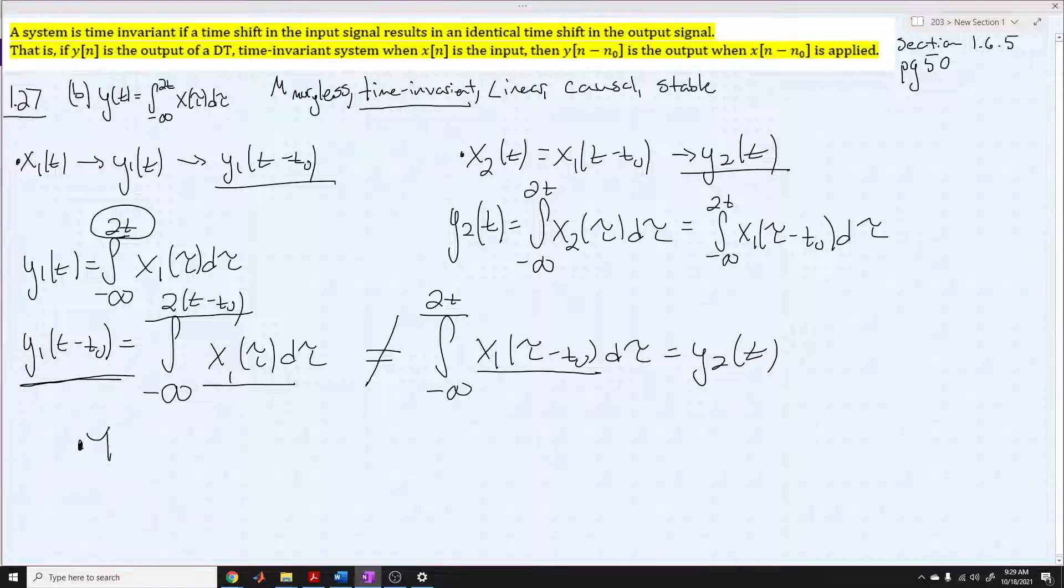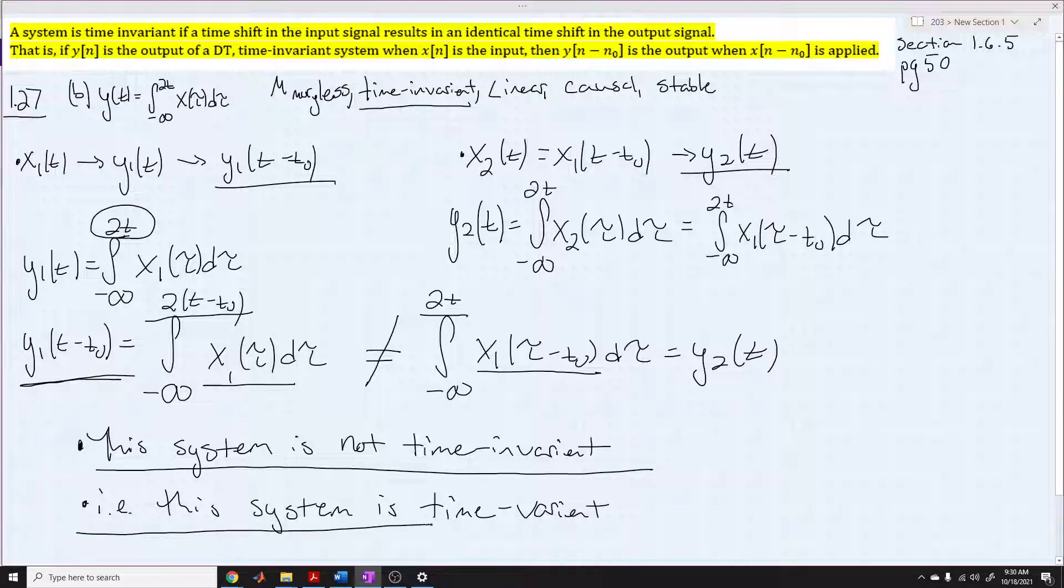And there's going to be a lot more than one input signal where this is not going to be equal. And if it's not equal for one input signal, then it is not a time invariant system. So this system is not time invariant, that is also known as this system is time variant. I try to stick with this terminology time invariant because this class deals a lot with linear time invariant systems, but this pops up once in a while where it'll just say is it time variant or is it not time variant.